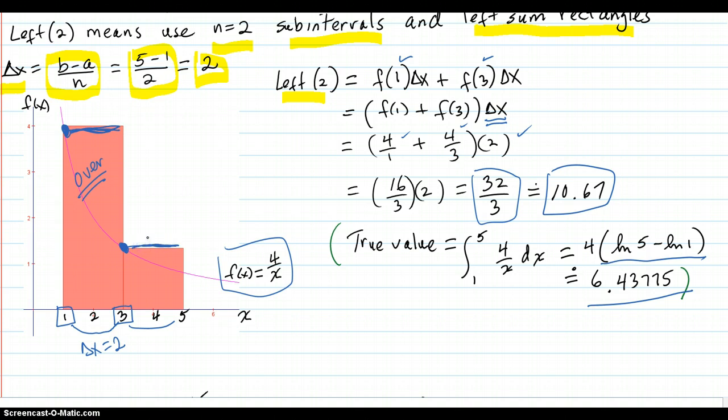So in this case, this left sum happens to be an overestimate. And as you can see, it's way over, because there's a lot more area covered in these rectangles than there is under the curve. And that's the way it came out. 10.67 is a lot larger than the true value.